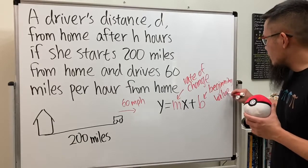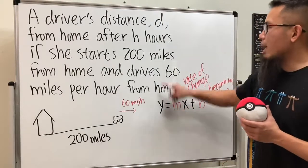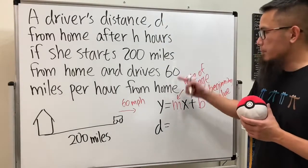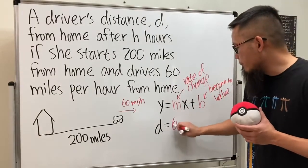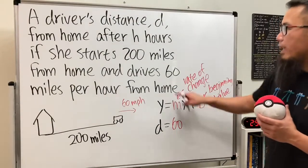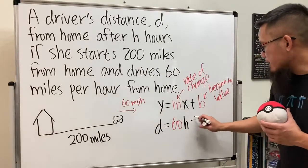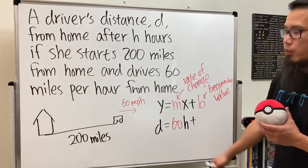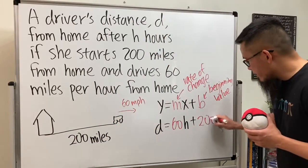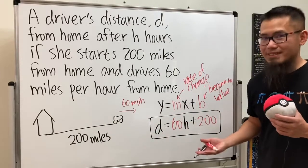Here we are not using y but rather d for distance. The rate of change is the speed, which is positive 60 miles per hour since she's going away from home. The input is h for hours. Then we add b, the starting value, which is 200 miles from home. So the equation for this situation is d = 60h + 200.